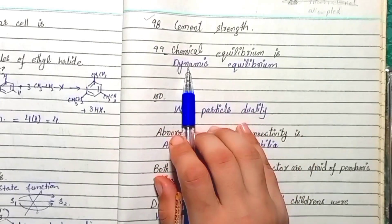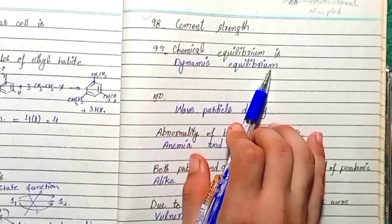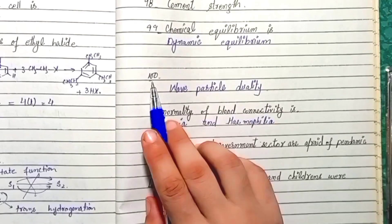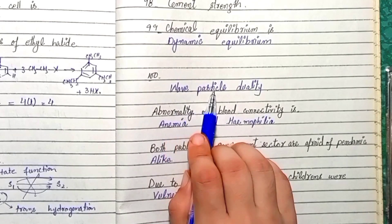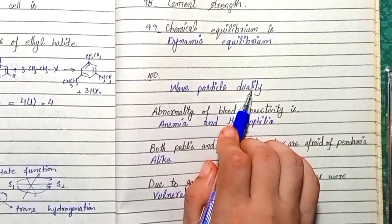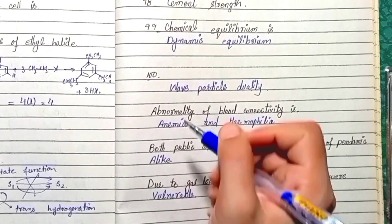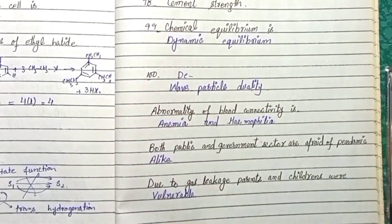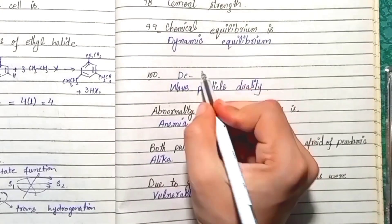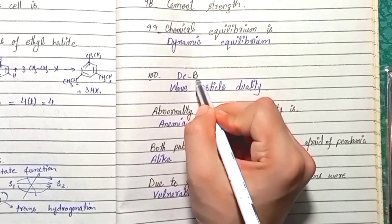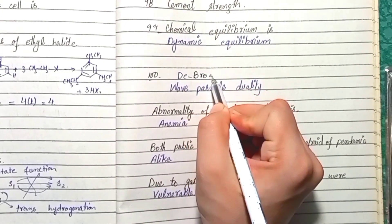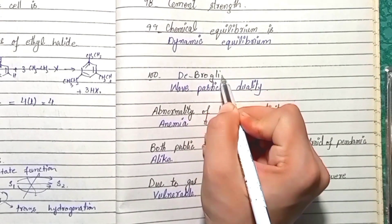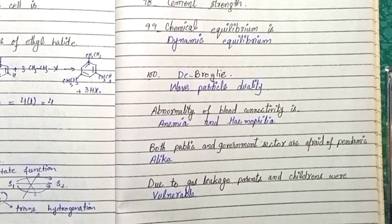Question 99: Chemical equilibrium is dynamic equilibrium. Question 100: The answer is wave-particle duality. De Broglie's hypothesis explains wave-particle duality.